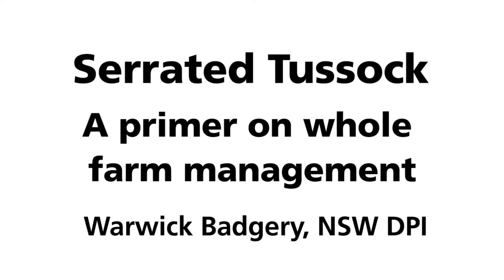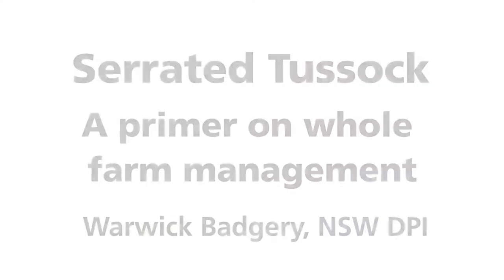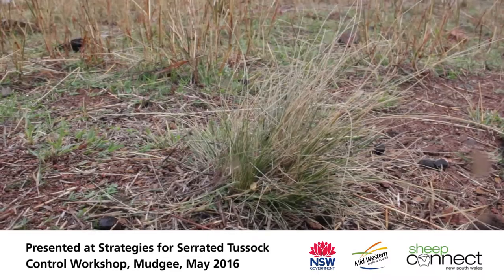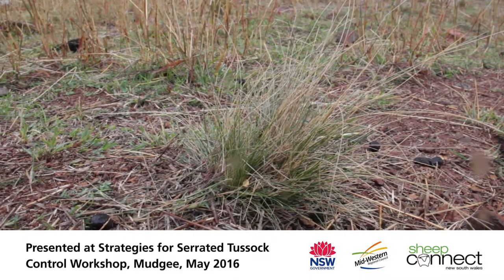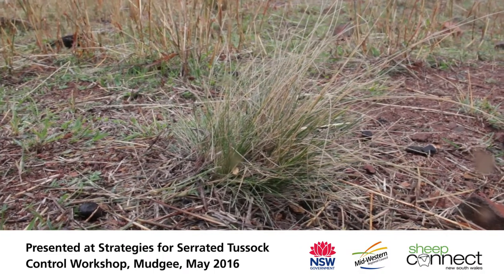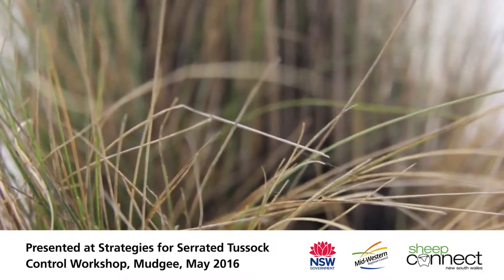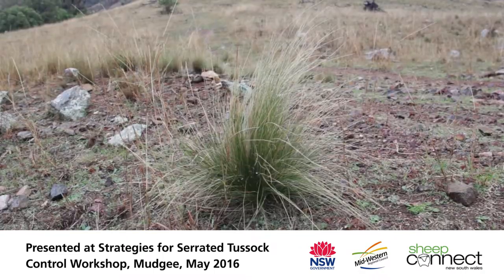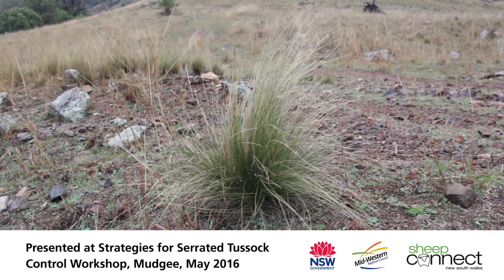Serrated tussock is one of our worst perennial grass weeds. It occupies over 1 million hectares across south-eastern Australia. The reason it's such a problem is it's highly invasive and it's unpalatable to livestock, so it causes large production losses. It's native to South America where it's a non-native species and it's part of a number of other unpalatable species.